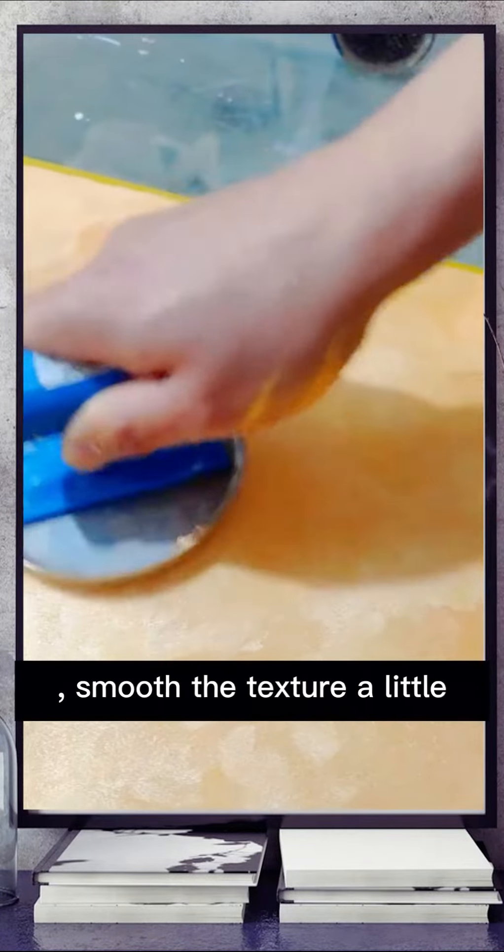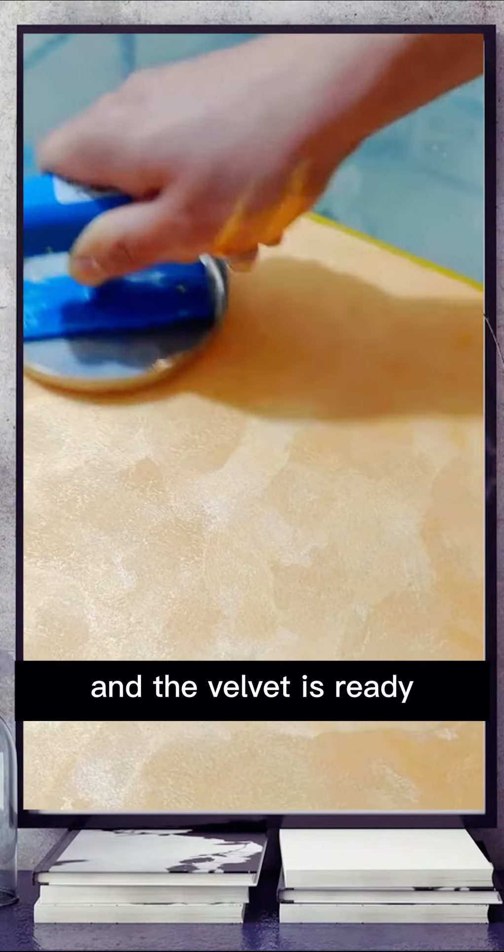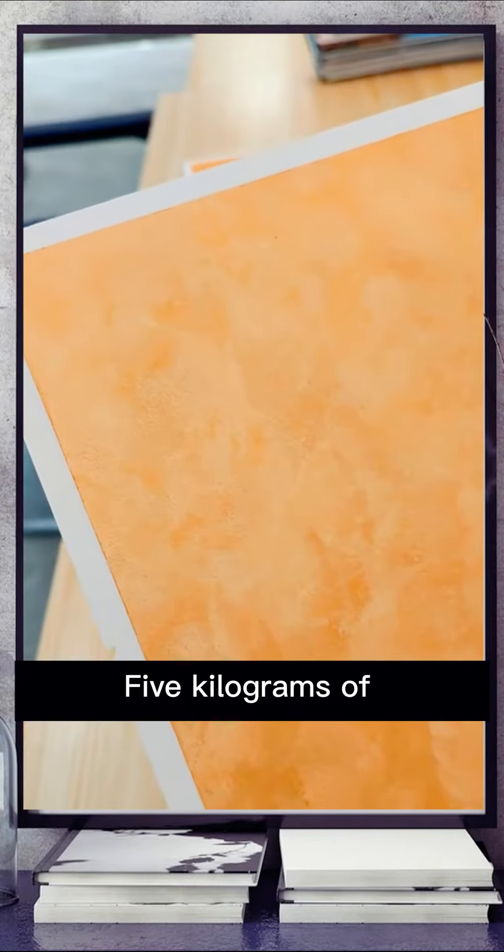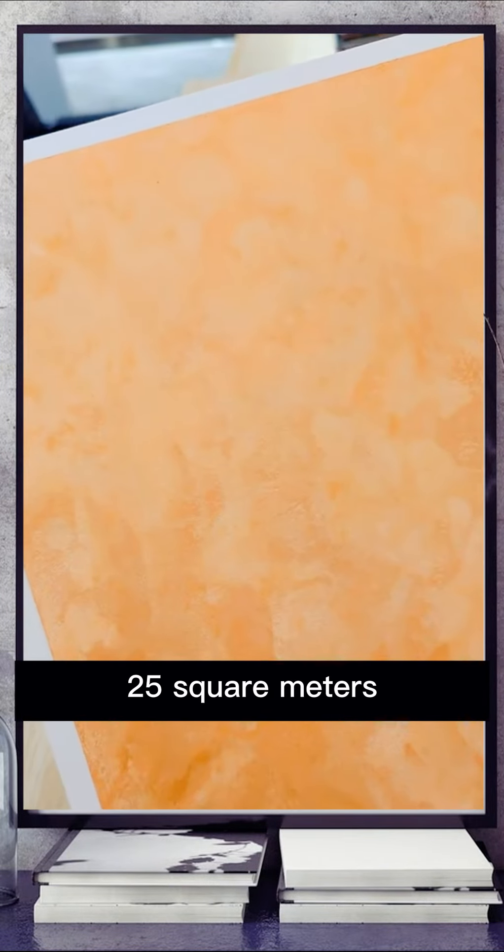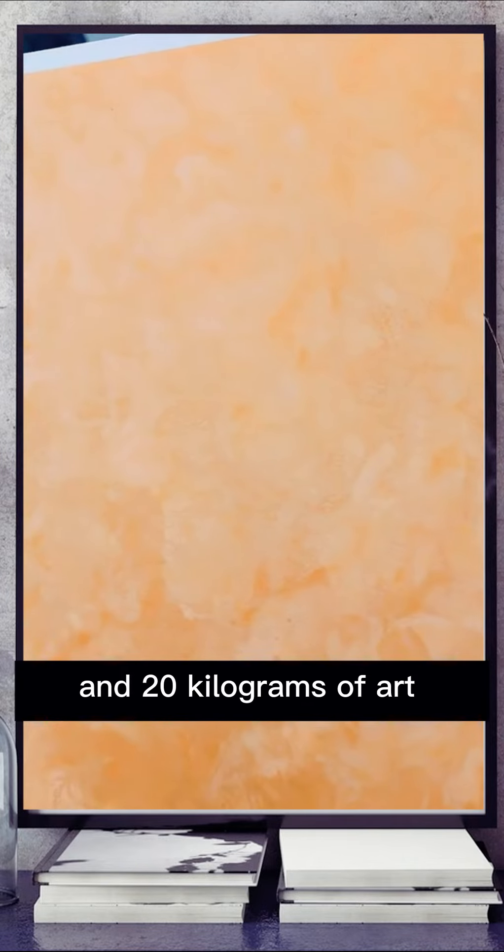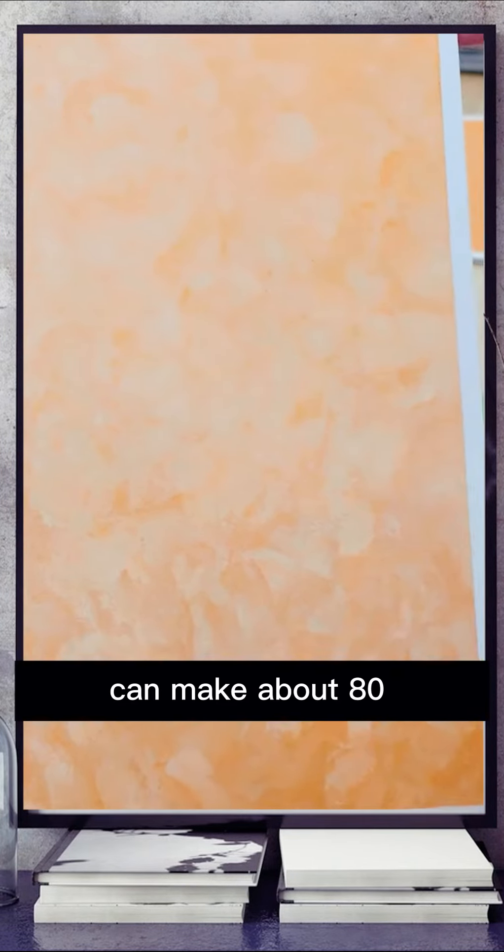Smooth the texture a little and the velvet is ready. Five kilograms of velvet can make about 25 square meters, and 20 kilograms of art can make about 80 square meters.